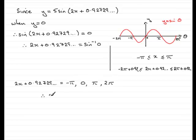So 2x would be equal to, well, you'll need a calculator. And if you do minus pi minus this 0.92 odd value, you should end up with minus 4.0688 and so on. Do the same for each of these. And you'll end up with minus 0.92729 and so on. And this one, 2.2143 and so on. And the last one here, 2 pi, take away this, you should find you get 5.3558 and so on. Alright.